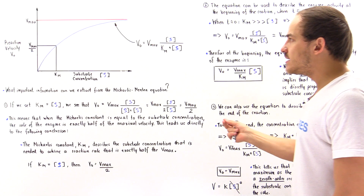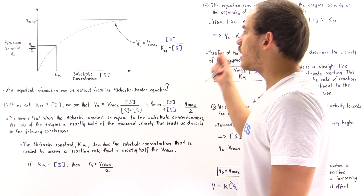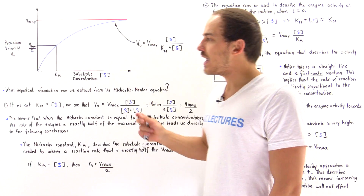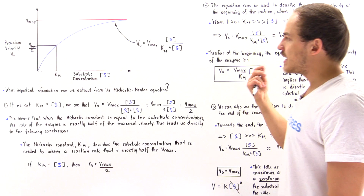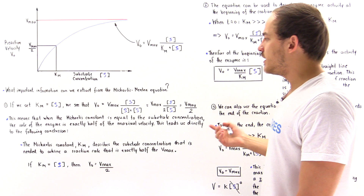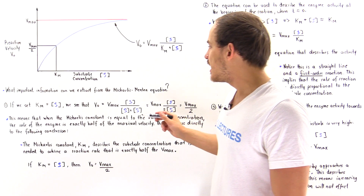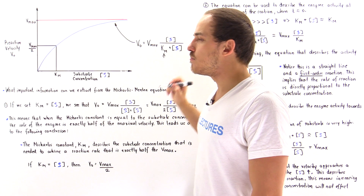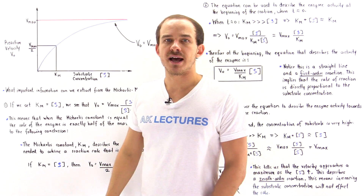This is the meaning of the Michaelis-Menten equation. In the next lecture, we're going to discuss the meaning behind the KM value in much more detail.